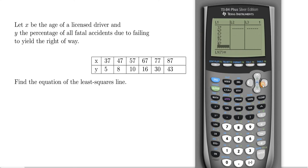Then we go over here and we type in the rest of the data. So 5, 8, 10, 16, 30, and 43.